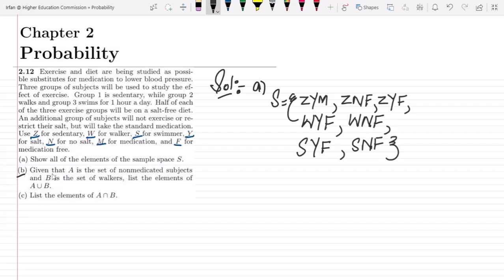In part B of my question, given that A is the set of non-medicated subjects and B is the set of walkers, list the elements of A union B.